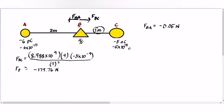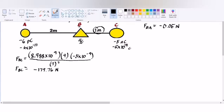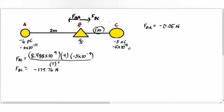Now we check the sign. Looking at the illustration, Force B-C is pointing to the right, so the sign must be positive. Since our calculator gave us negative 179.76, we change it to positive. Even if the calculation gives a negative result, if the direction is to the right, we make it positive: positive 179.76 Newton.